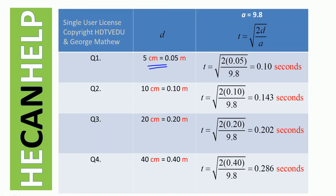For question number one, d equals 5 cm. Substituting 0.05 as d and the magnitude of the acceleration due to gravity, 9.8, we get 0.10 seconds. When we substitute 10 centimeters (0.10 meters), we get 0.143 seconds as the reaction time. When we substitute 20 centimeters (0.20 meters), we get 0.20 seconds. When we substitute 40 centimeters (0.40 meters), we get 0.286 seconds as the reaction time.